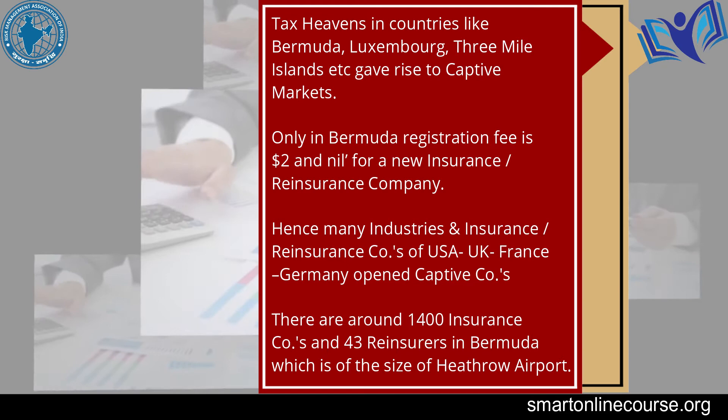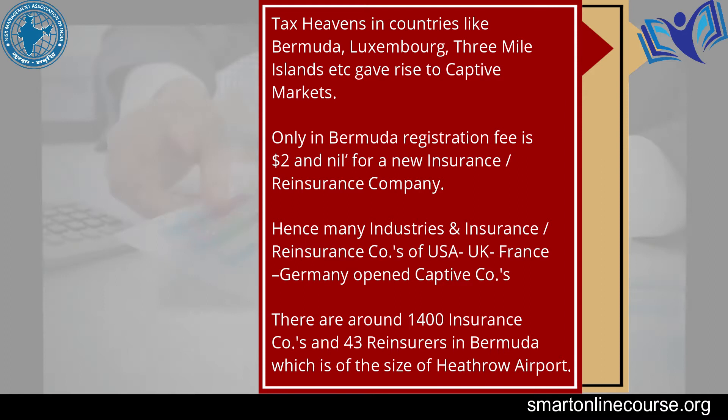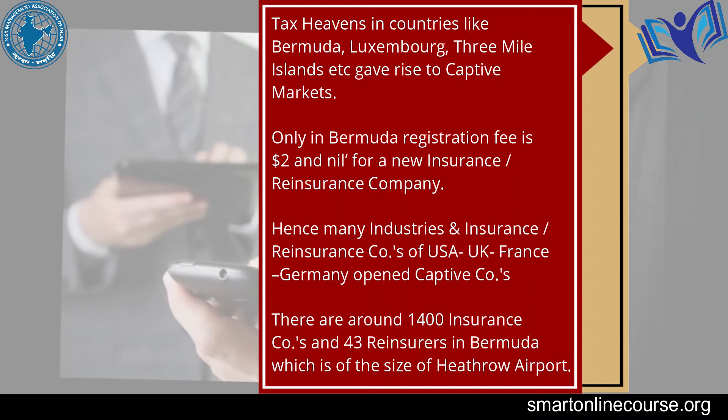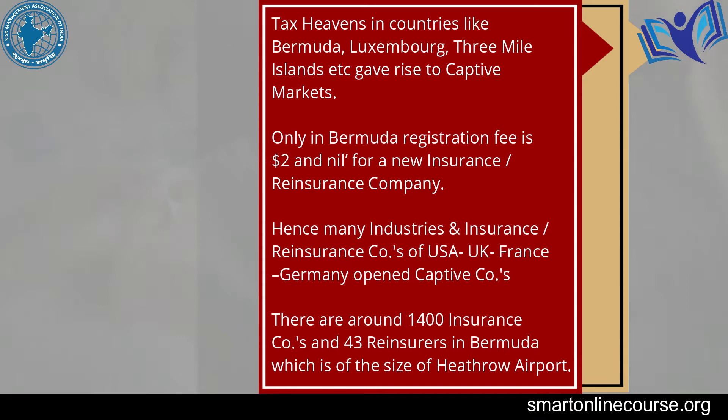Only in Bermuda, there are more than around 400 insurance companies and 43 reinsurances. Bermuda is a small island, roughly slightly bigger than a small airport, and still it is the leading captive market even today.